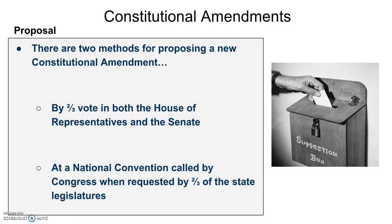There are two ways to propose an amendment. The first way is that an amendment can be proposed by a two-thirds vote in both houses of Congress — two-thirds of the House of Representatives as well as two-thirds of the Senate. The other way is at a national convention called by Congress and requested by two-thirds of the state legislatures. Two-thirds is your magic fraction to remember, and proposing an amendment happens at the national level of government.